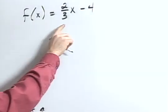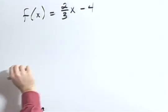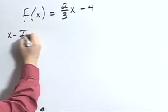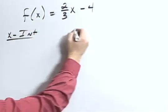Graph f of x equals two-thirds x minus four. To do so, I'm going to first find the x-intercept and the y-intercept.